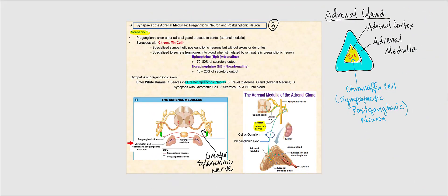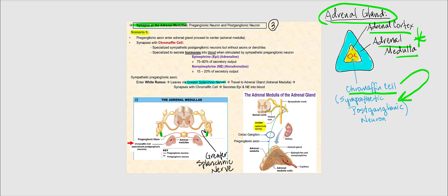What we're now going to look at is synapsing that occurs at the adrenal medulla. We have two adrenal medullae — one on top of the right kidney and another on top of the left kidney. This is another area where the sympathetic pre-ganglionic neuron and the sympathetic post-ganglionic neuron can synapse. This is scenario number five. We have the outer adrenal cortex and the inner adrenal medulla, and we find these highly specialized chromaffin cells, which are classified as a sympathetic post-ganglionic neuron. Once activated, they secrete hormones — epinephrine (epi) and norepinephrine (NE) — directly into blood.